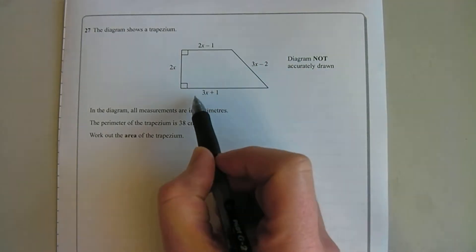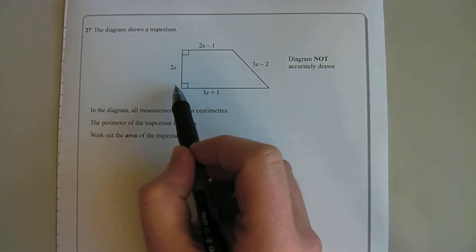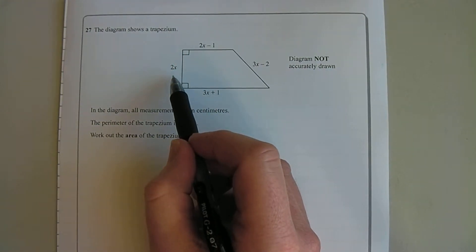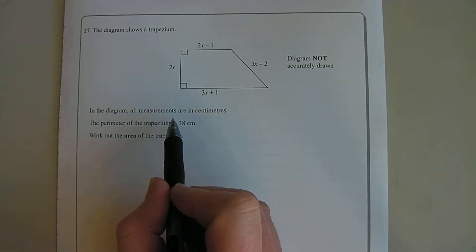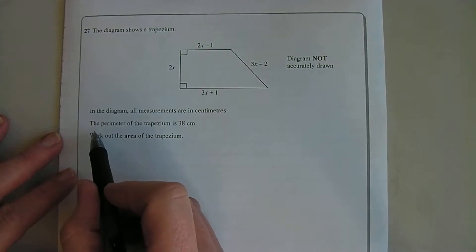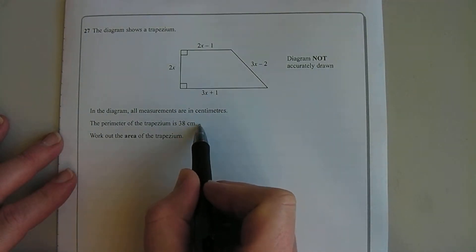All the measurements in the diagram are in centimeters. The perimeter of the trapezium is 38 centimeters, and it wants us to work out the area of the trapezium.